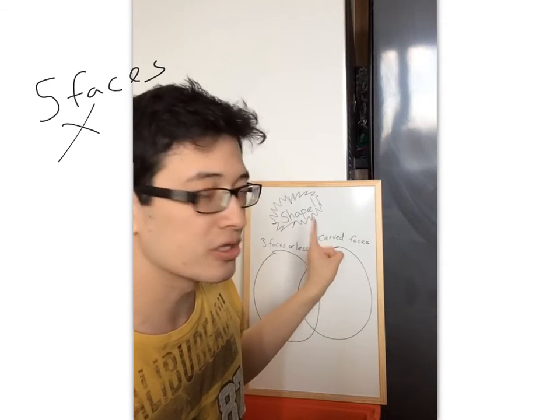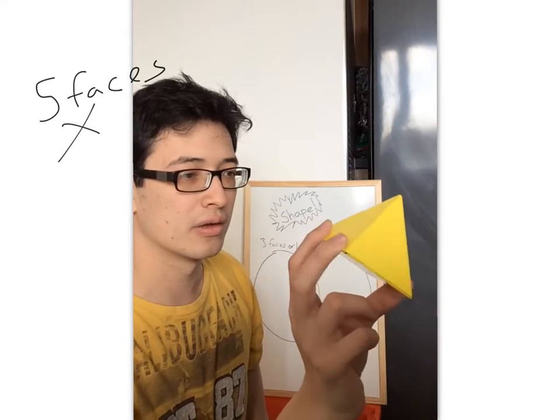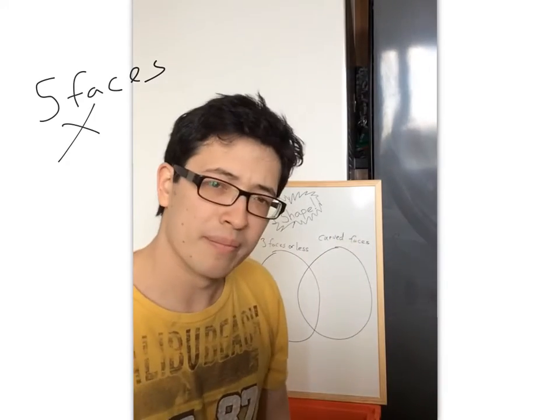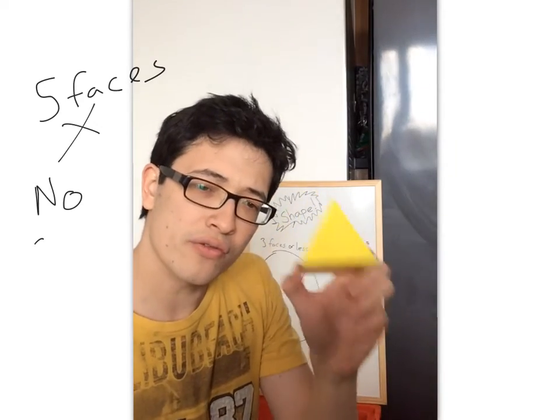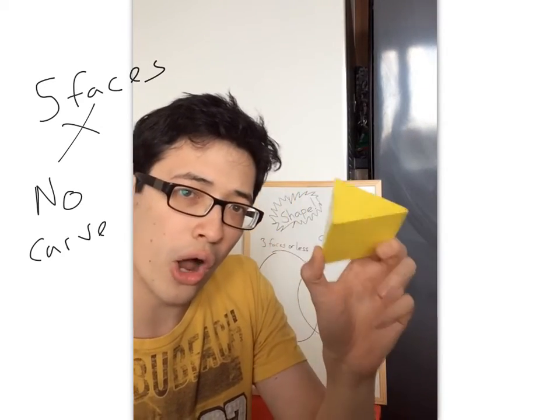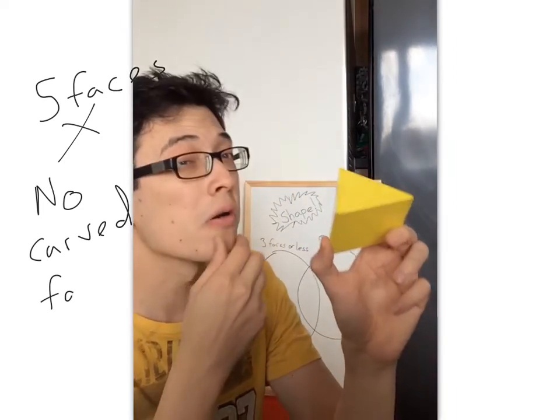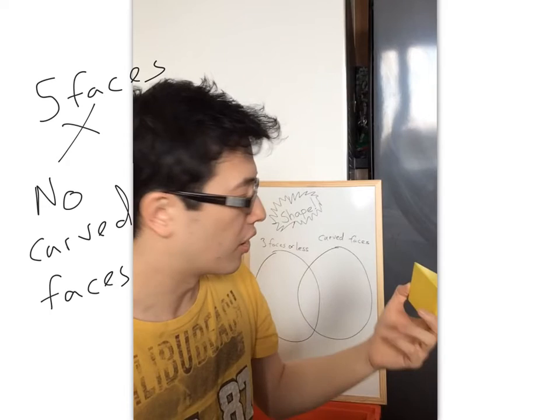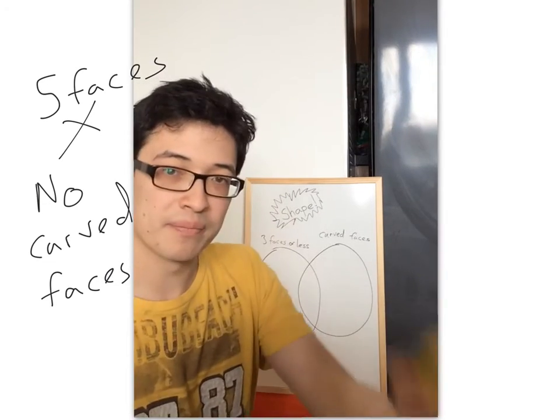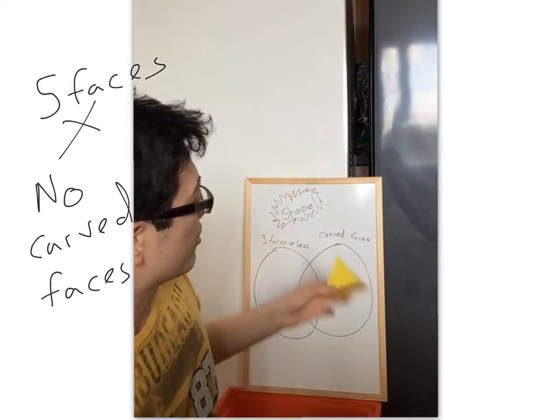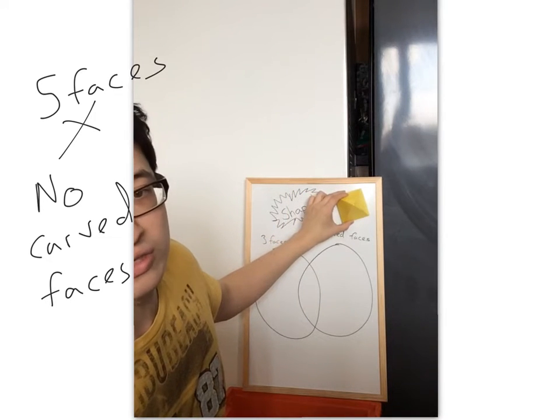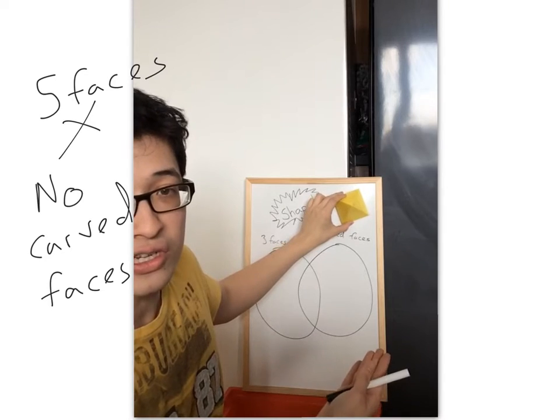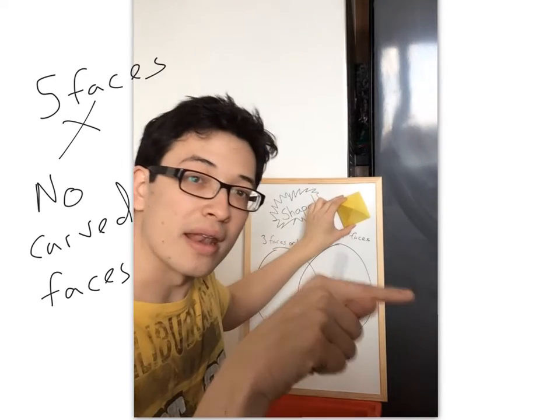Let's try this next circle. Does it have a curved face? No. So where do you think this shape would go on our Venn diagram? Well, you're right. This shape, if we were to put it on our Venn diagram, would have to go outside of our Venn diagram because it doesn't fit in any of the circles. So it'll look a little bit like this.